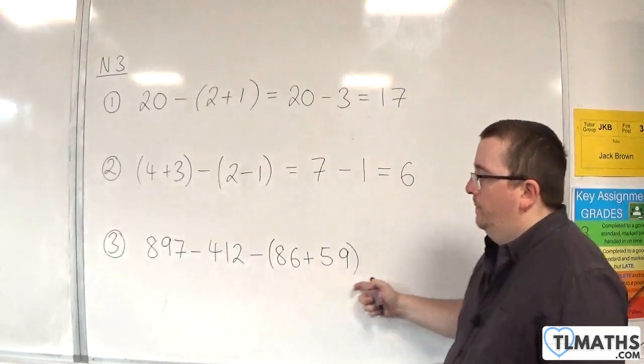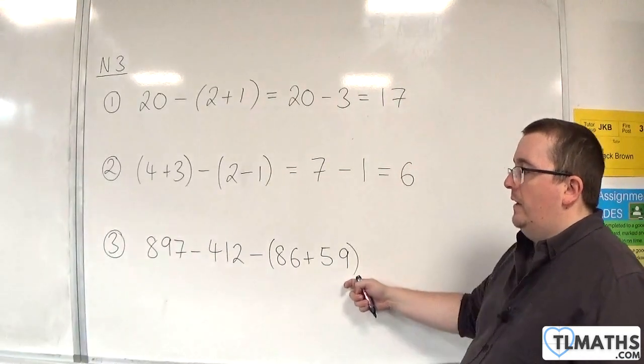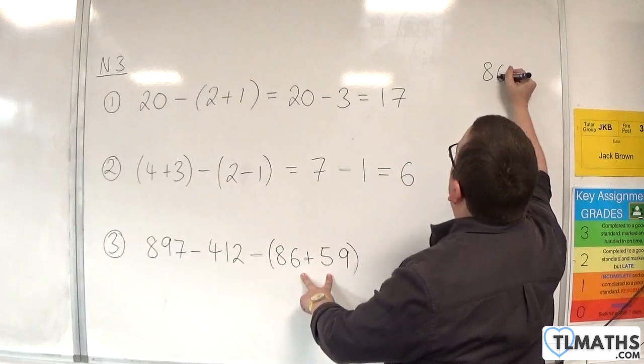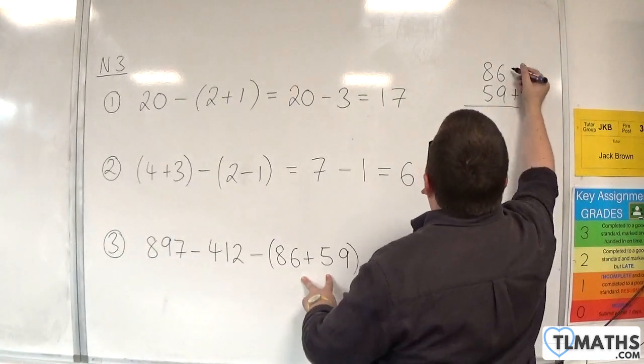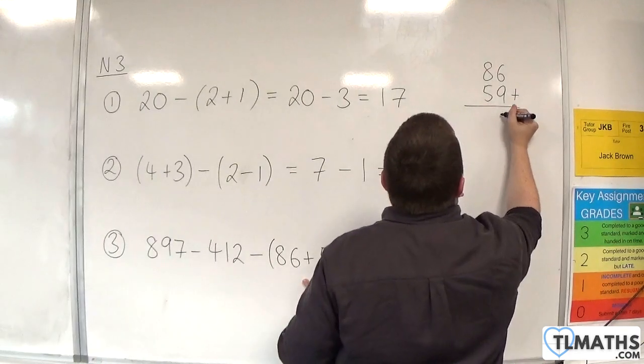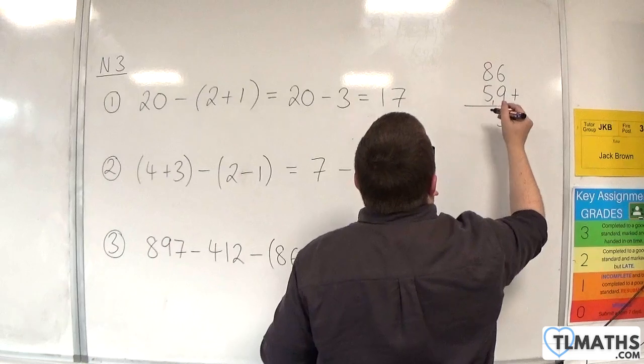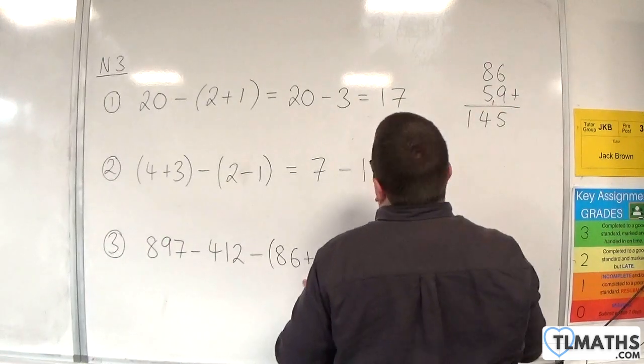Now, with number 3, we've got to do what's in the brackets first. So we've got the 86 plus 59. 6 plus 9 is 15, so 5 carry the 1. 8 plus 5 is 13, plus the 1 is 14. So we've got 145.